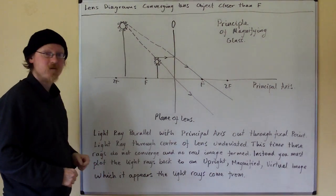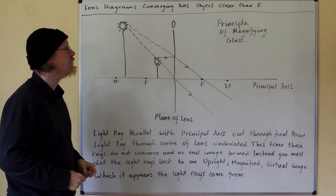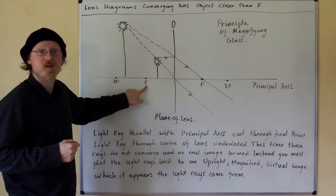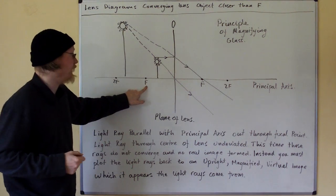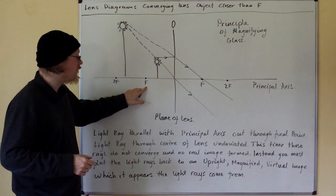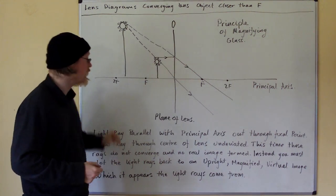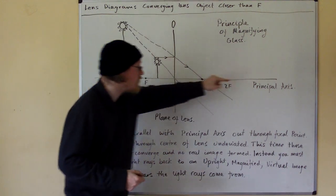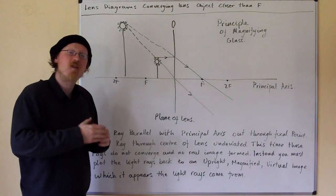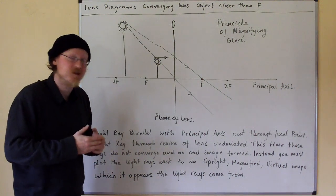Lens diagrams: converging lens, object closer than the focal point. When the object is closer than the focal point, the plane of the lens is still the same, the principal axis is still the same, and the first half of the lens diagram is the same.